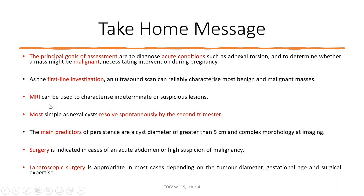The take-home messages are: it is very important to assess and diagnose acute conditions like adnexal torsion and to determine whether the mass is malignant. The first-line investigation should be ultrasound scan. MRI is indicated only when the lesion is indeterminate or suspicious. Most simple adnexal cysts resolve spontaneously by the second trimester; the main predictors for a persistent cyst are diameter more than 5 cm or complex morphology on imaging. Surgery is indicated in acute abdomen or high suspicion of malignancy, and laparoscopic surgery is appropriate in most cases depending on tumor diameter, gestational age, and surgical expertise.